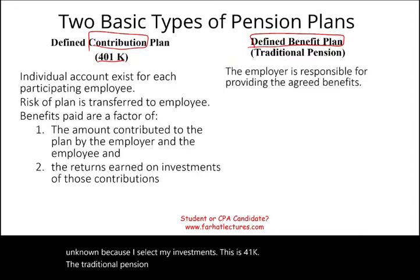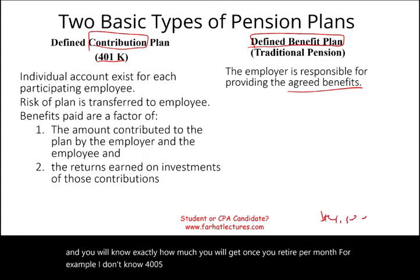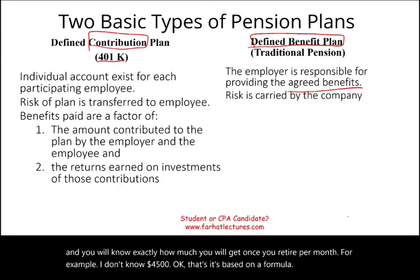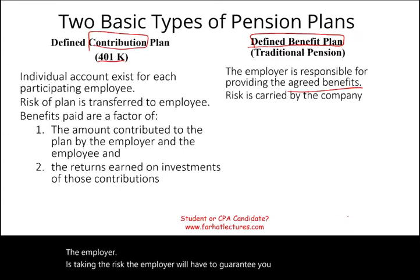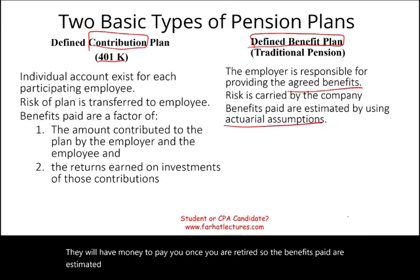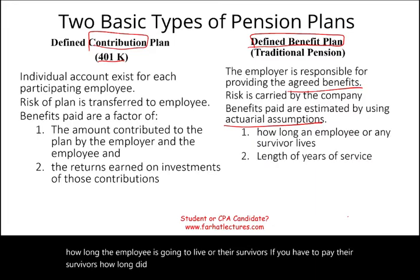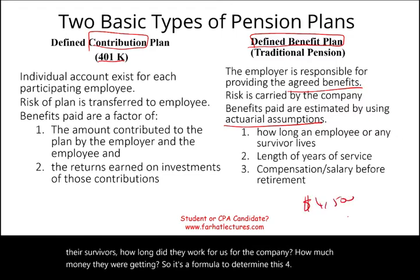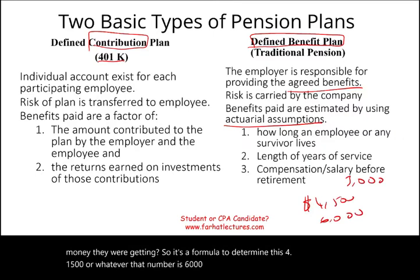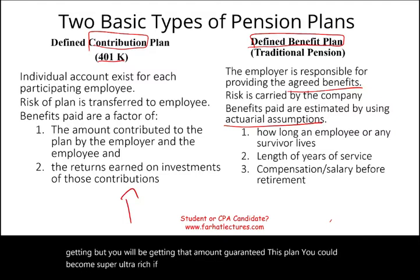The traditional pension plan — the employer is responsible for providing the agreed benefit. There's a formula and you will know exactly how much you'll get per month once you retire — say, $4,500. The employer takes the risk and must guarantee that money. They work with the pension plan fund and actuaries to make sure they contribute enough. The benefits paid are estimated using actuarial assumptions: how long the employee will live, how long they worked for the company, how much they were earning — a formula to determine your guaranteed monthly amount.